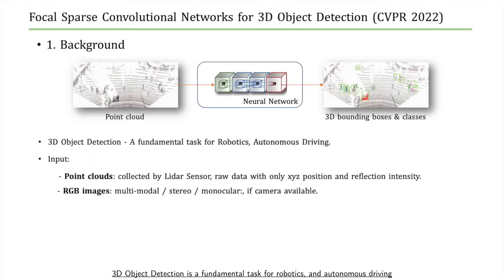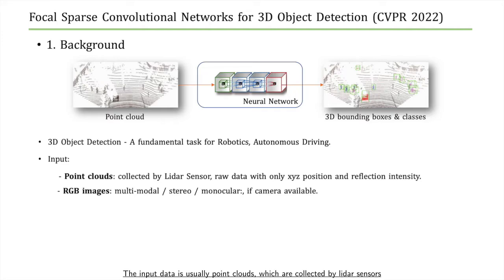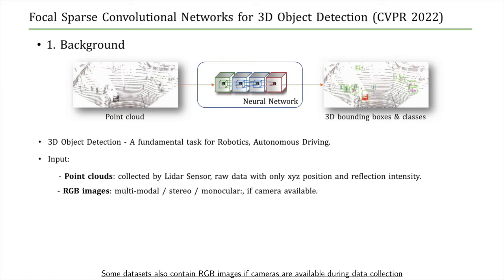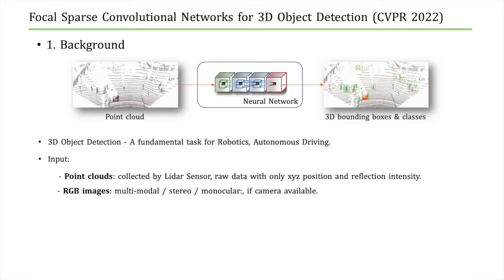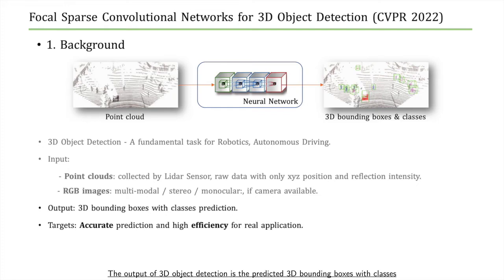3D object detection is a fundamental task for robotics and autonomous driving. The input data is usually point clouds collected by LiDAR sensors, containing XYZ positions and reflection intensity. Some datasets also contain RGB images if cameras are available. According to the settings and camera numbers, it can be classified into multimodal, stereo, or monocular 3D object detection. The output is predicted 3D bounding boxes with classes, and the target is accurate prediction with high efficiency.